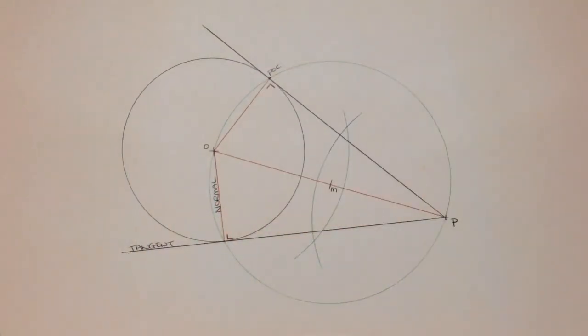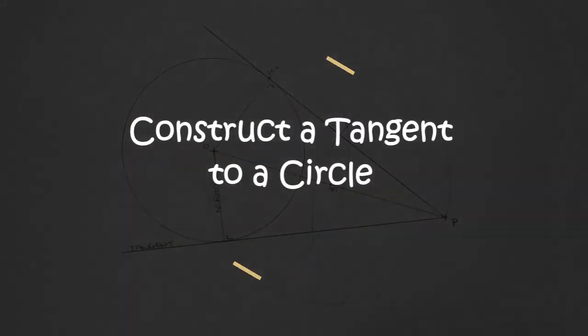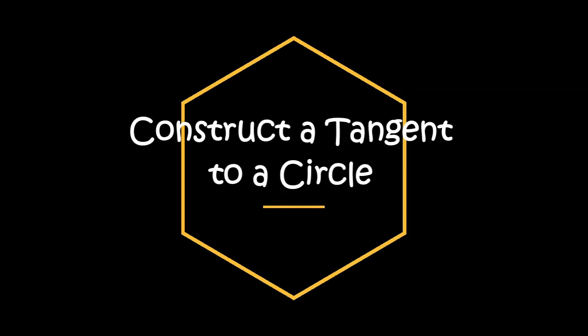That's that done there, guys. That is how you construct a tangent to a circle from a point outside it. Thank you.